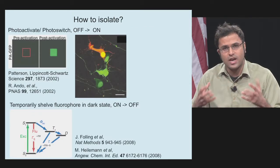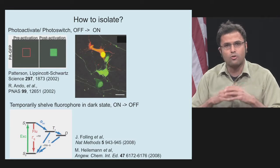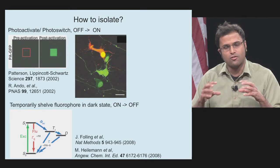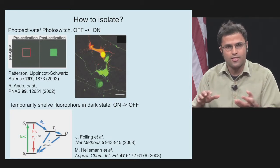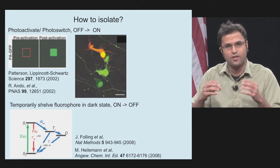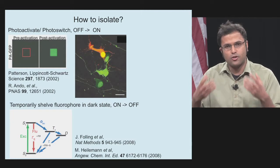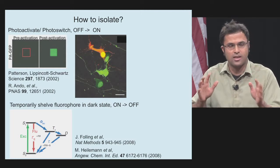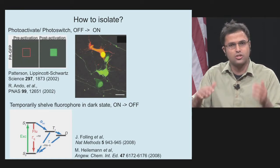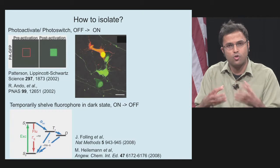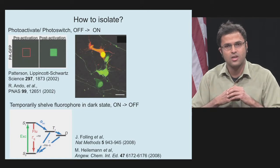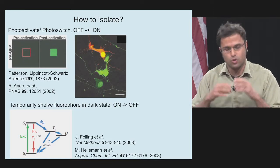The next question is how you actually perform this isolation in practice. There are a growing number of ways to do this. One approach is to take advantage of photo-switchable or photo-activatable molecules that are normally dark, but when you apply a pulse of UV light, can be switched to an activated bright state. A complementary strategy is to shine high-intensity light on a population of molecules that is initially bright and temporarily turn most of them off, so that only a few are fluorescing at a time. Then over time, you switch on some others and read out their locations.